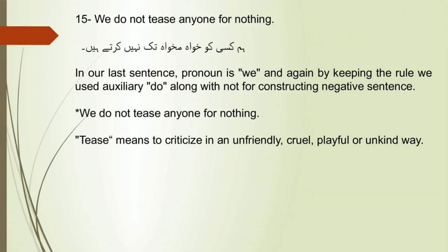Sentence 15: We do not tease anyone for nothing. In our last sentence, the pronoun is 'we,' and again, by keeping the rule, we used the auxiliary 'do' along with 'not' for constructing the negative sentence. We do not tease anyone for nothing. Tease means to criticize in an unfriendly, cruel, playful, or unkind way.